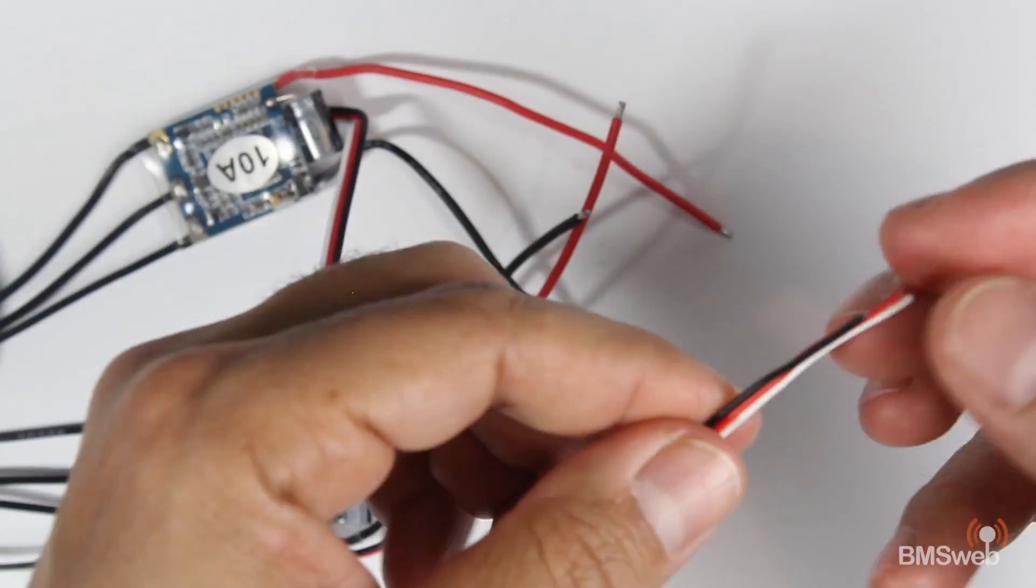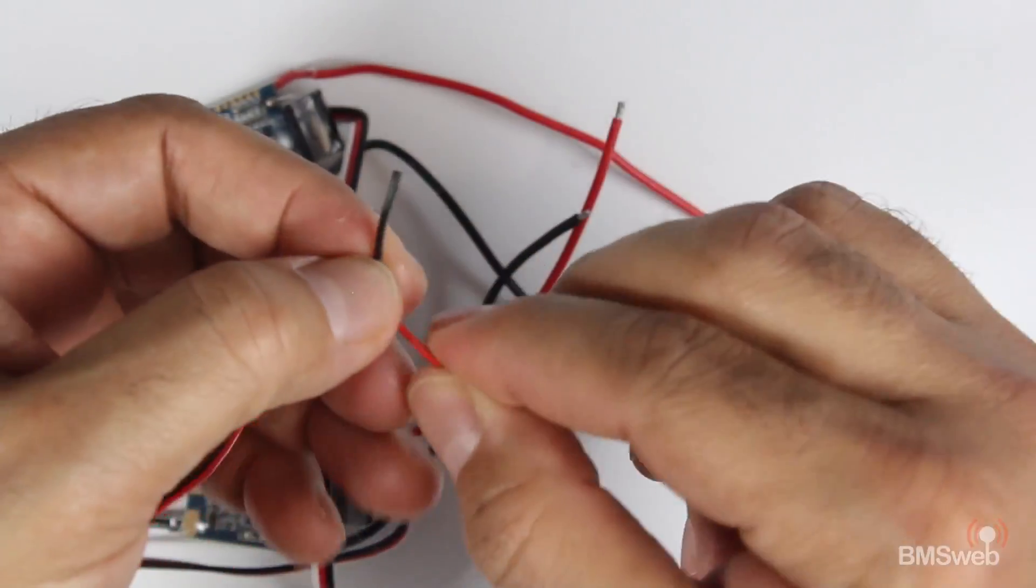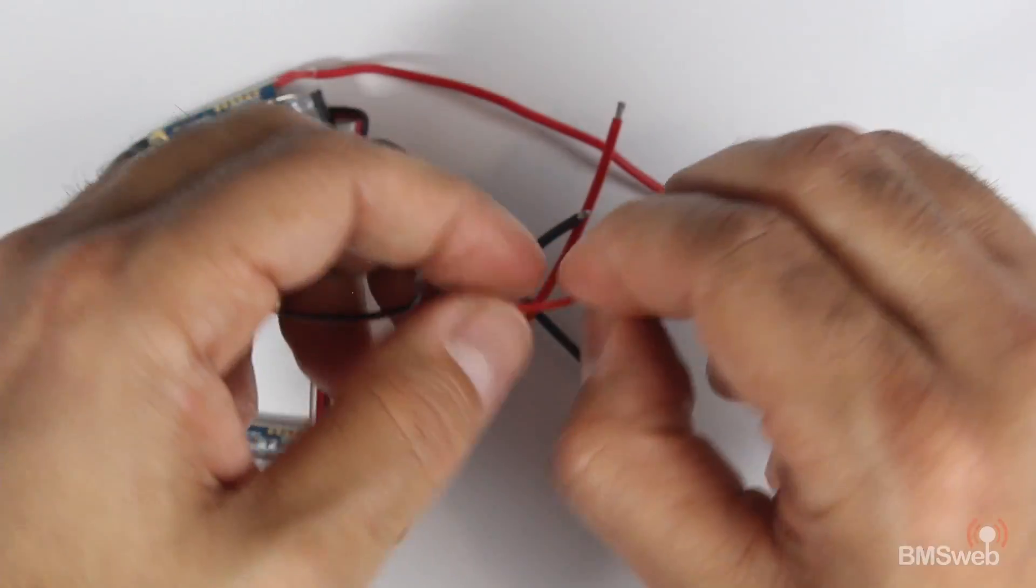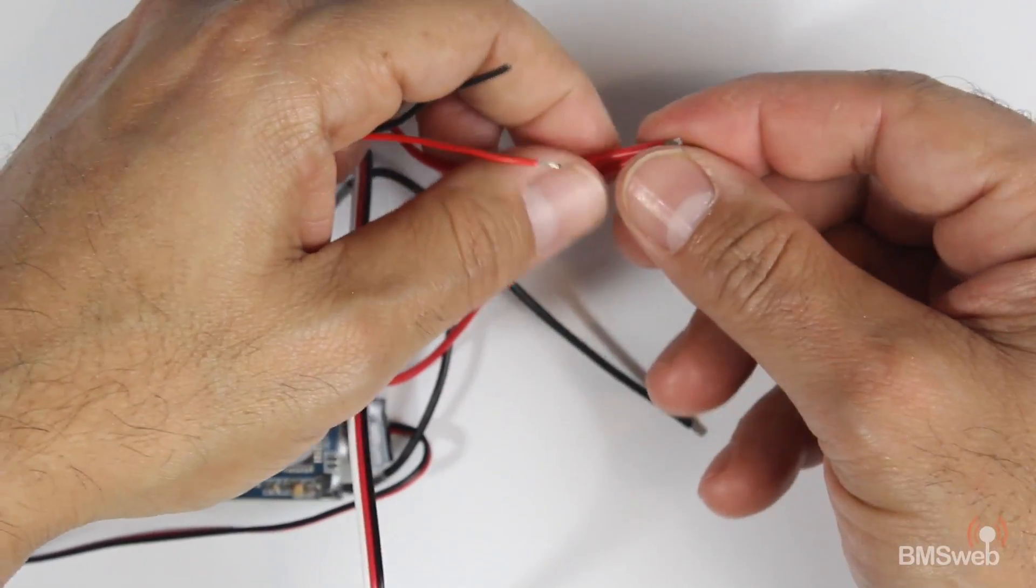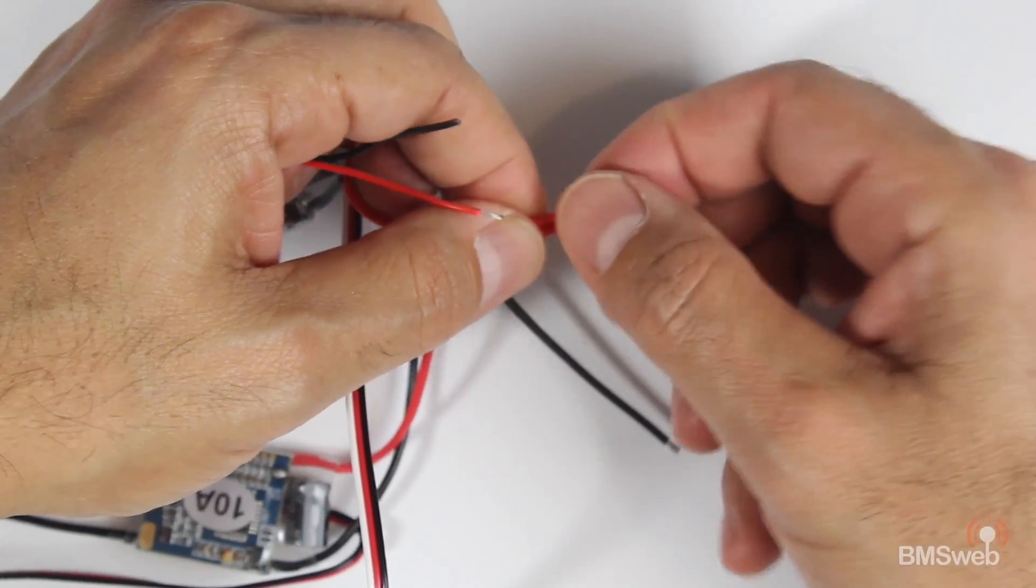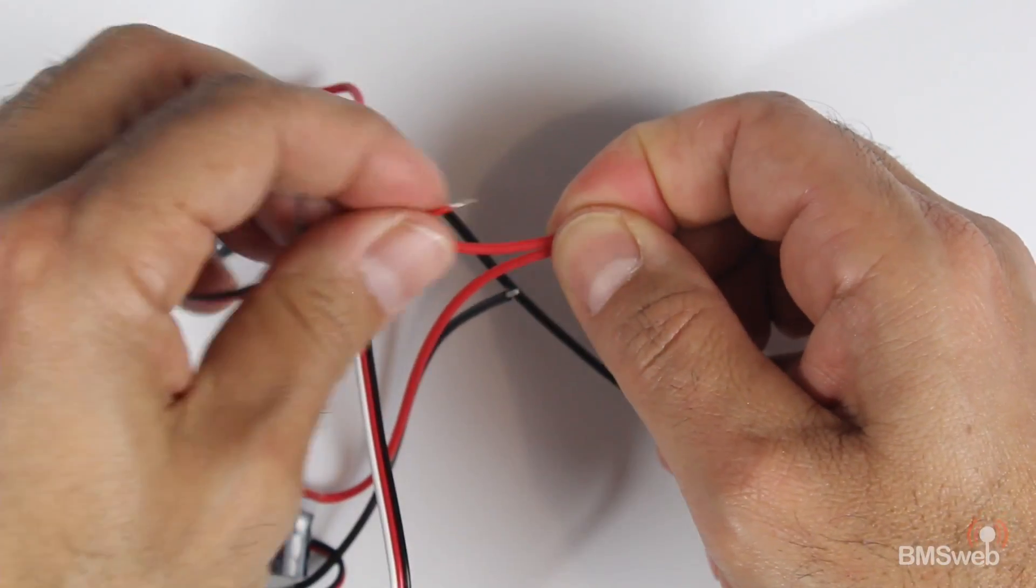What I've also got is a typical servo cable. What I've done with mine is just basically taken the white off and then stripped these down. Then what I've done—this is the way I've gone about doing this—hopefully you can see this reasonably well—is I've brought all these three together like so.